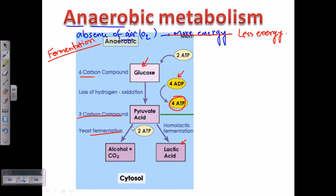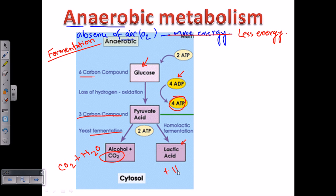From pyruvate, if it goes to lactic acid fermentation, that is a one-step process. Pyruvate can directly produce lactic acid via lactic acid fermentation with the enzyme lactic acid dehydrogenase. On the other hand, to produce alcohol from pyruvate, a further intermediate called acetaldehyde is needed. From acetaldehyde, alcohol is then produced by releasing carbon dioxide. If traveling from pyruvate to alcohol via ethanol fermentation, the process produces carbon dioxide and water. If producing lactic acid, it produces lactic acid and water.